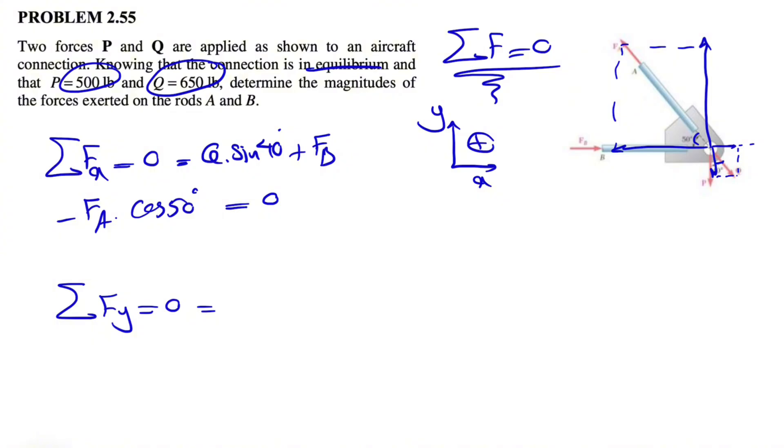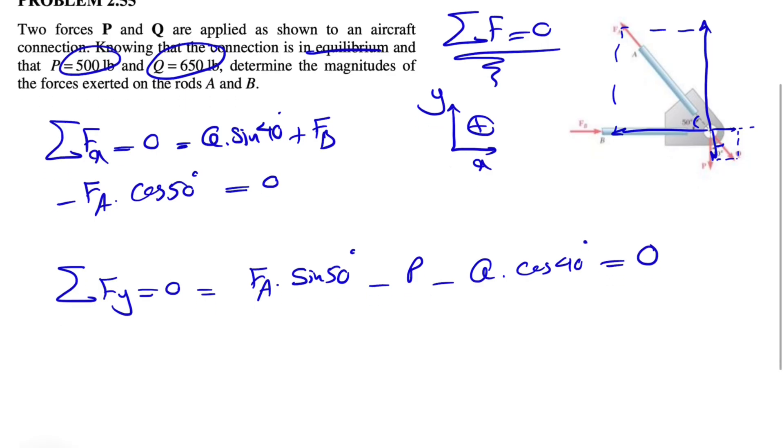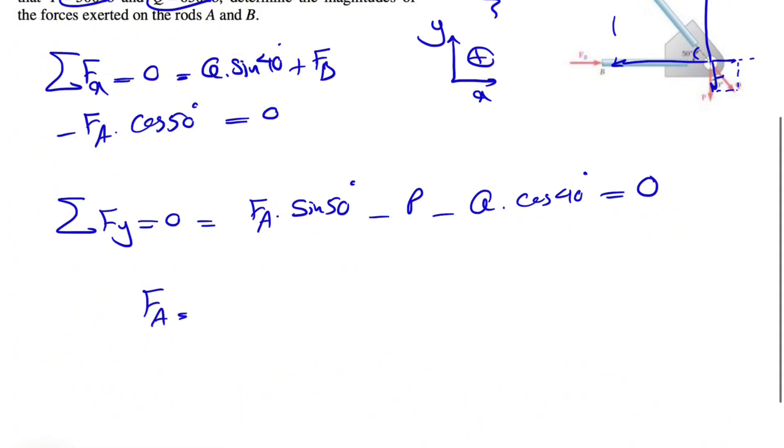But if we go with Y, we have FA sine of 50 degrees, since it's upward, minus P is equal to zero, minus P minus Q, this time cosine of 40 degrees would be the Y component equals zero. And here we can find FA, which will be P plus Q cosine of 40 degrees divided by sine of 50 degrees.